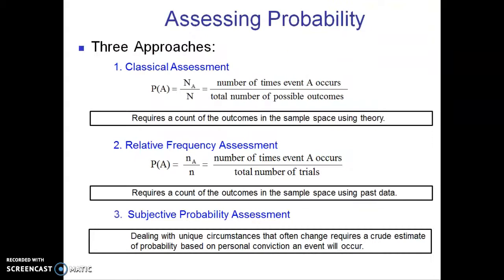All right, let's move on to assessing probability. There's actually three approaches that we can use. The first, called the classical assessment, is where we determine the probability by taking the number of times an event occurs, say event A, divided by the total number of possible outcomes. This is what we've been doing to keep it simple. And this works really well when you can define the sample space using theory. We know that if a deck of cards has 52 outcomes, then the probability of getting an ace is 4 out of 52. The probability of getting a black is 26 out of 52.